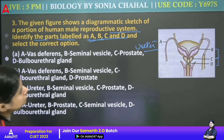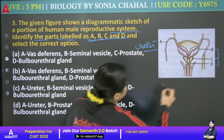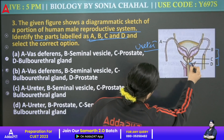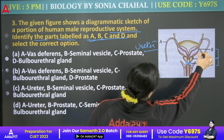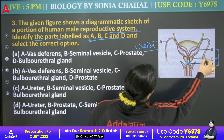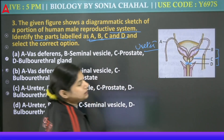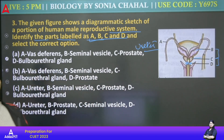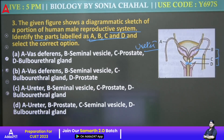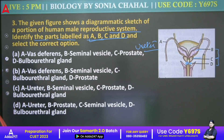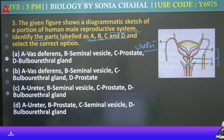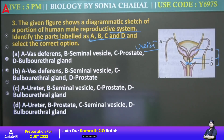Sorry — D is your bulbourethral gland. Then first comes prostate, then seminal vesicle. According to this, what should we answer? If we look at B — B is the seminal vesicle. We have to put prostate and seminal vesicle together.